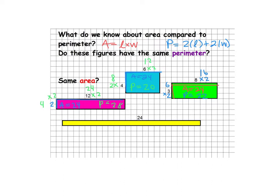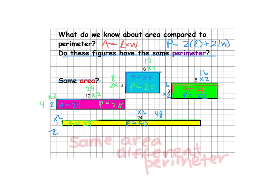Then finally, the yellow one: we've got 24 as our long side and 1 as the width. So 24 times 1 gives us an area of 24 again. But the perimeter: 24 times 2 is 48, and 1 times 2 is 2, so 48 plus 2 gives us a perimeter of 50. If you look, all of the areas are the same but our perimeters are different — same area, different perimeter. It's almost like the more stretched out it is, the larger the perimeter is.